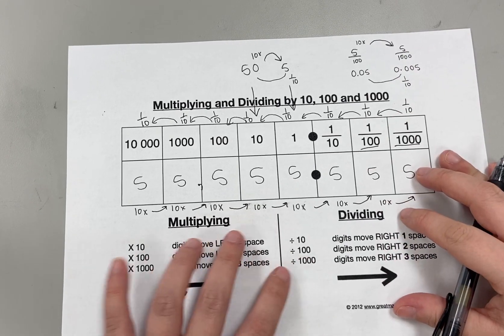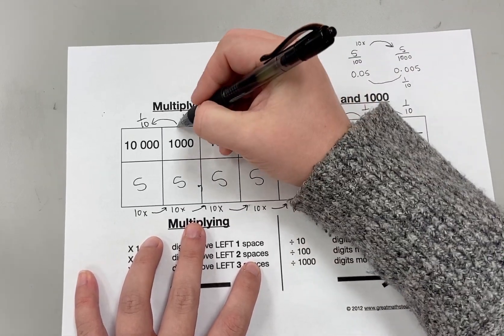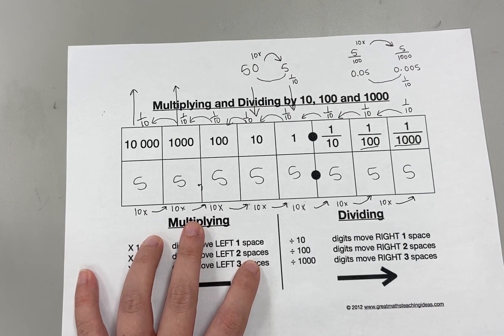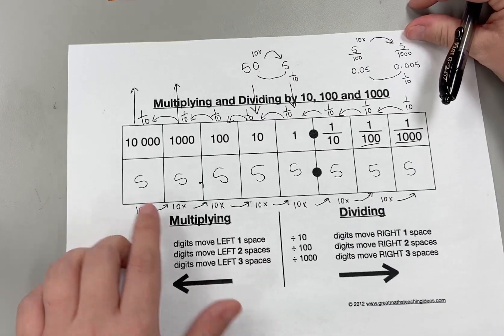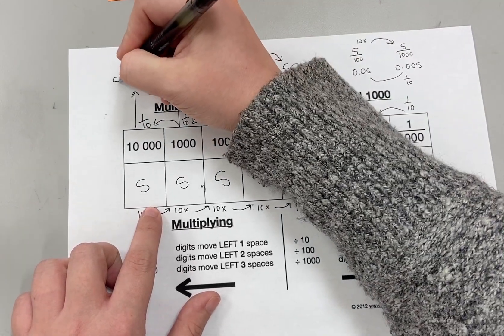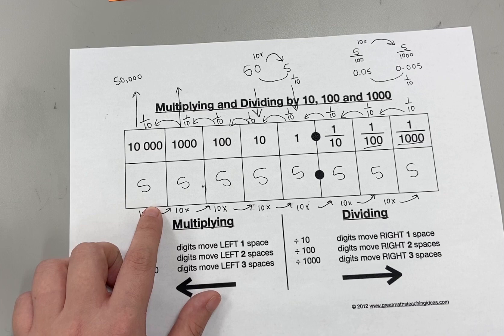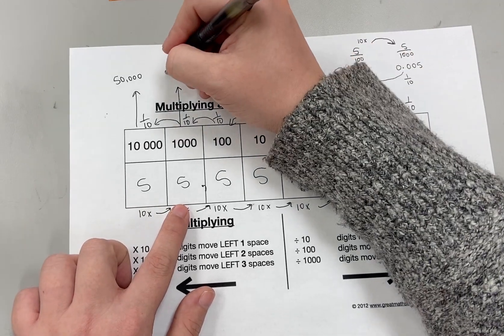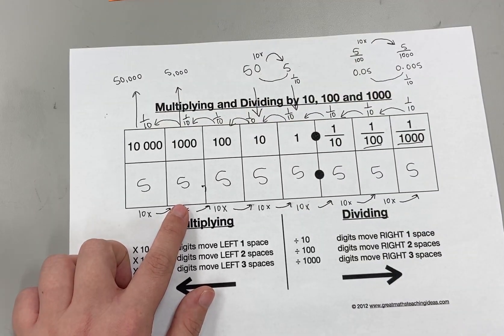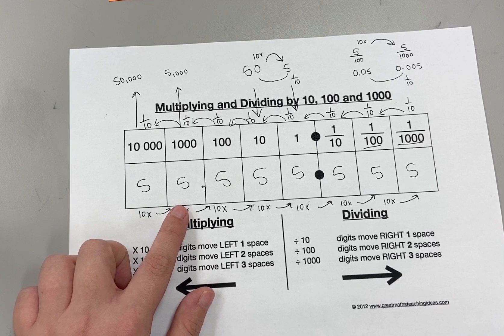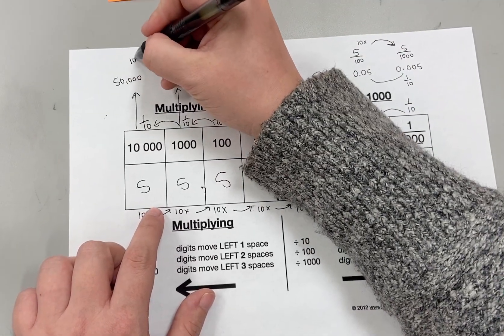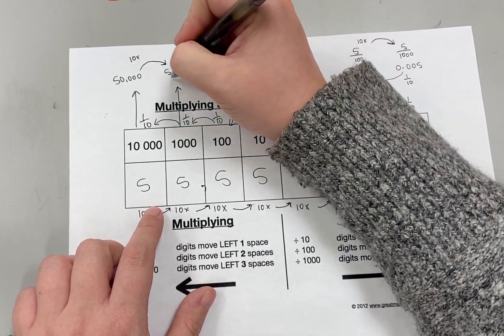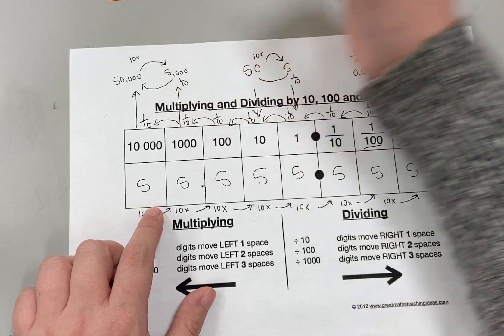Let's try one more. Let's compare the five in the thousands place to the five in the ten thousands place. First, find the value: the five in the ten thousands place has a value of fifty thousand. The five in the thousands place has a value of five thousand. Fifty thousand is ten times bigger than five thousand, which means that five thousand is one-tenth smaller than fifty thousand.